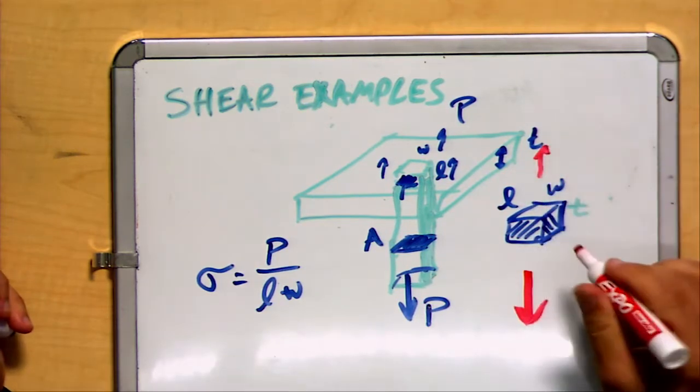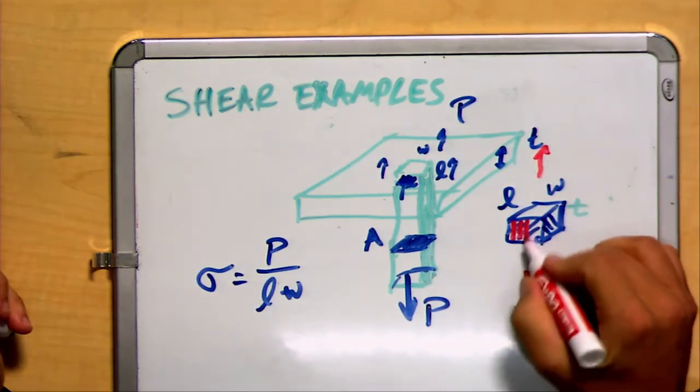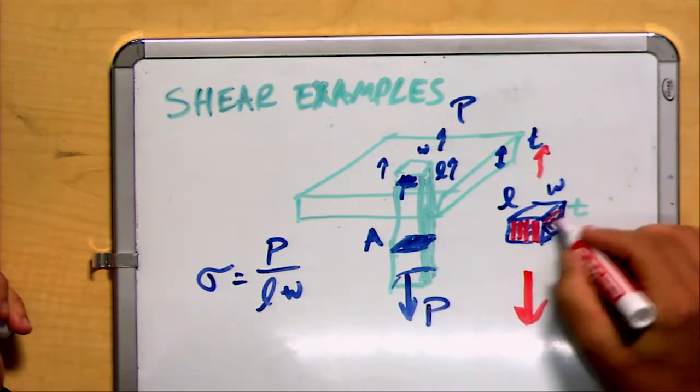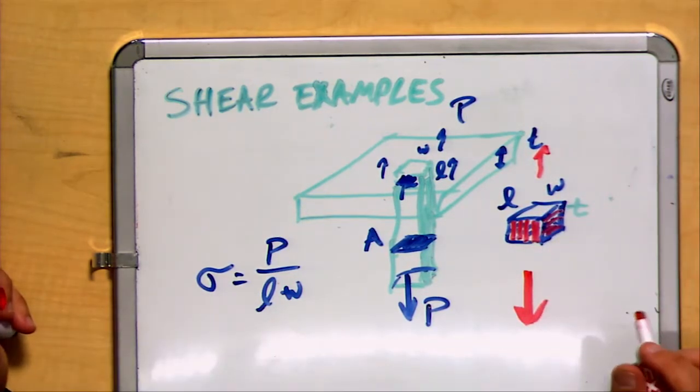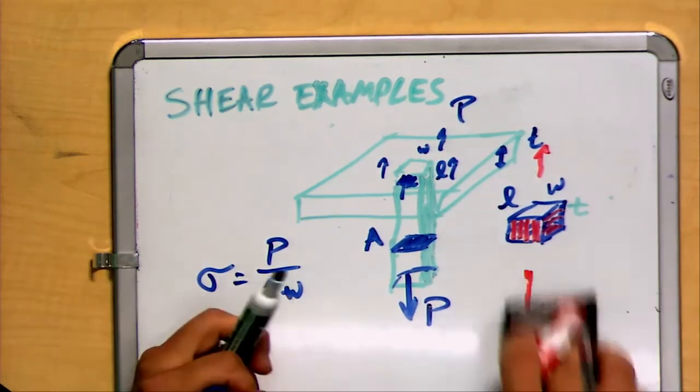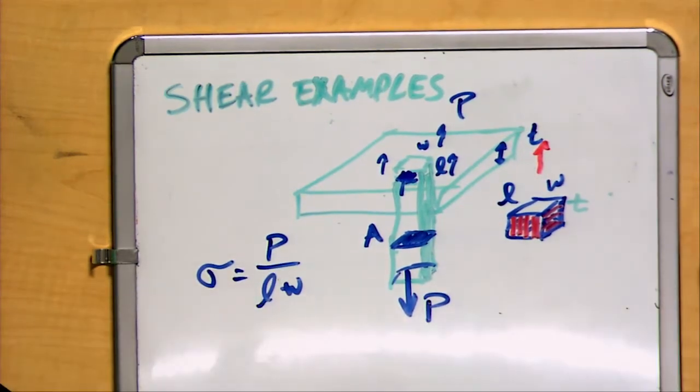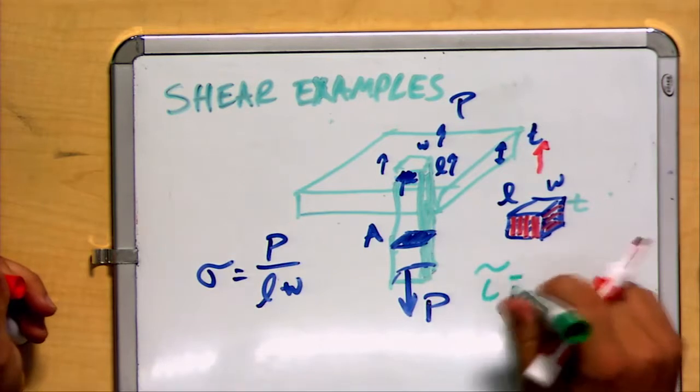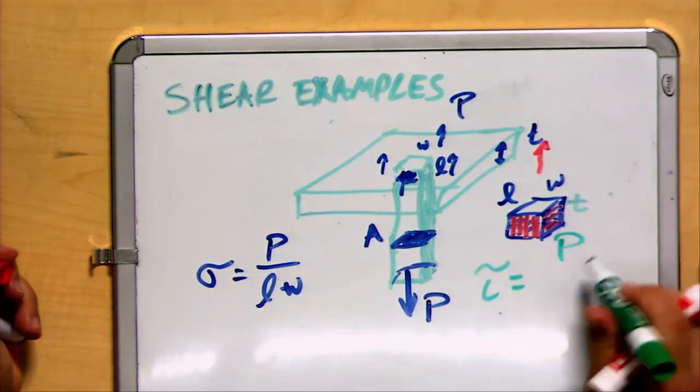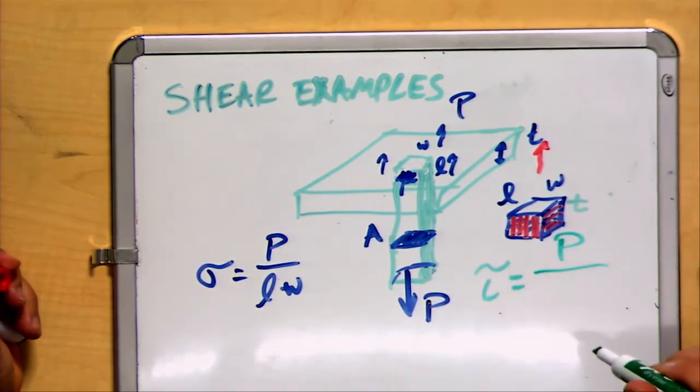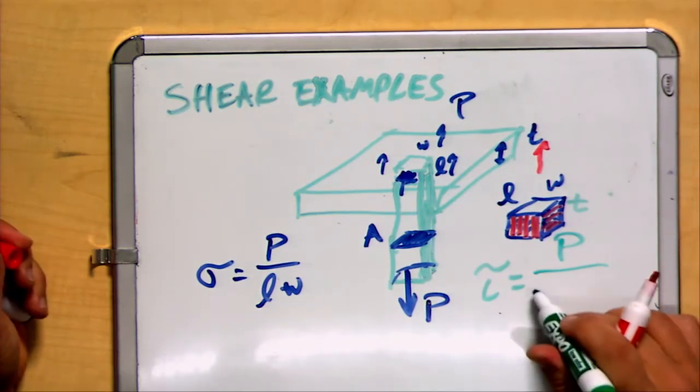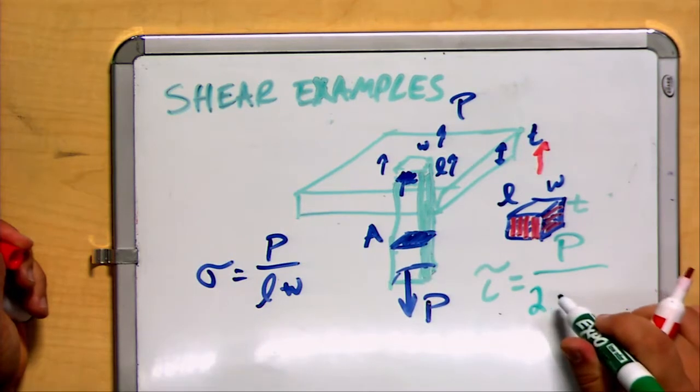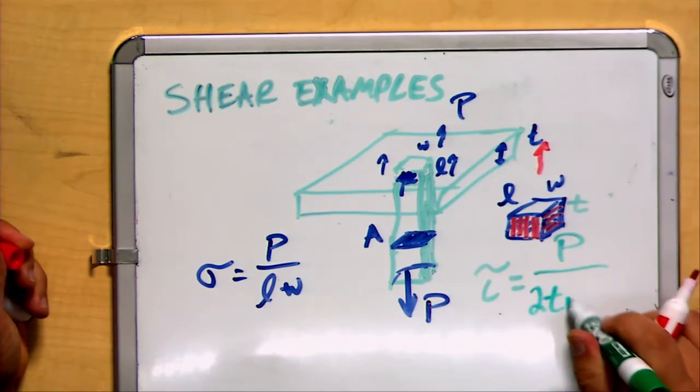The shear is going to act on this face and on this face, and additionally on the two on the left side and in the back. Our shear stress would be equal to the applied force divided by the combined areas: two sides that have a thickness of T and a width of W, plus two sides that have a thickness of T and a length of L.